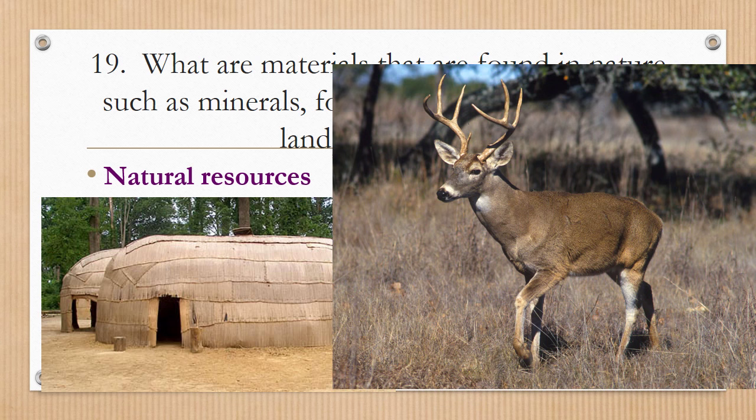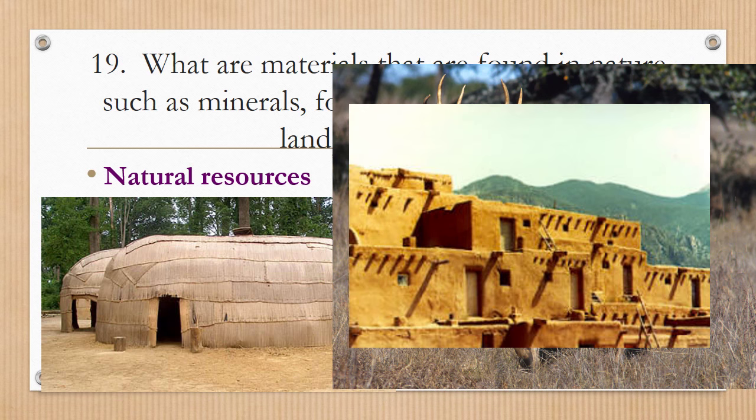A deer is another common natural resource that many of the eastern woodland Indians, including the Iroquois, used for all types of resources. And finally, the clay in the Pueblo dwelling is definitely a natural resource that the Pueblo had available to use.